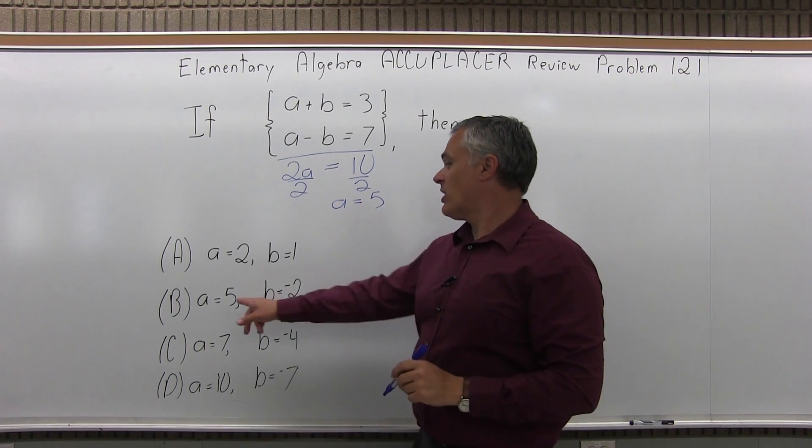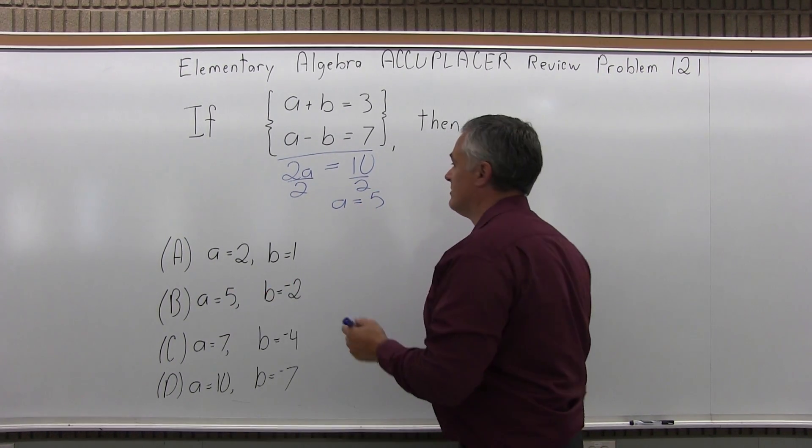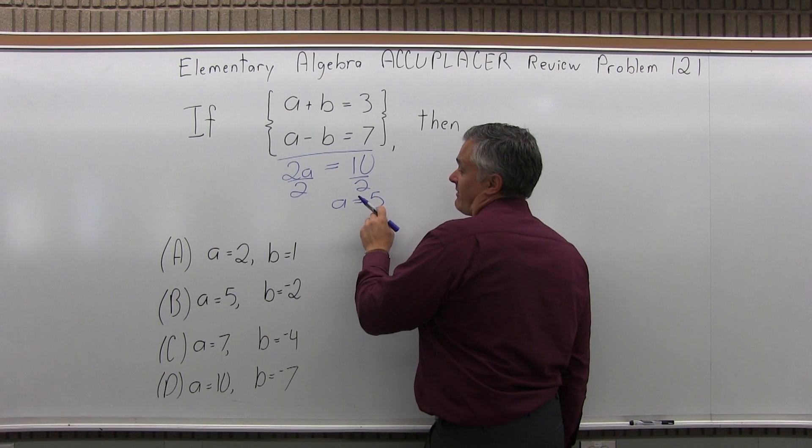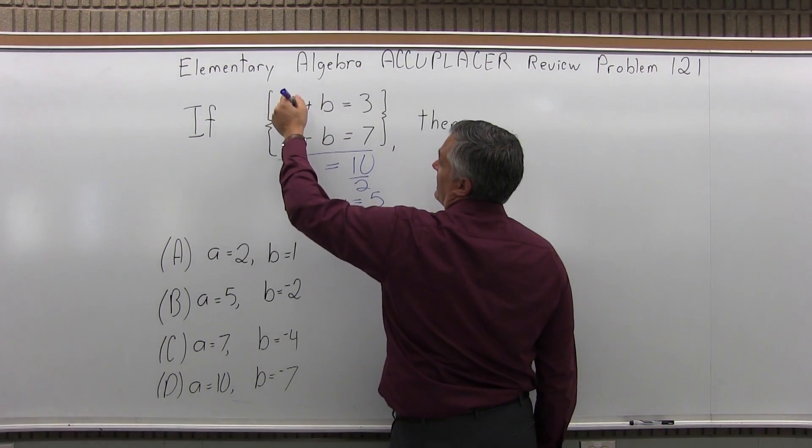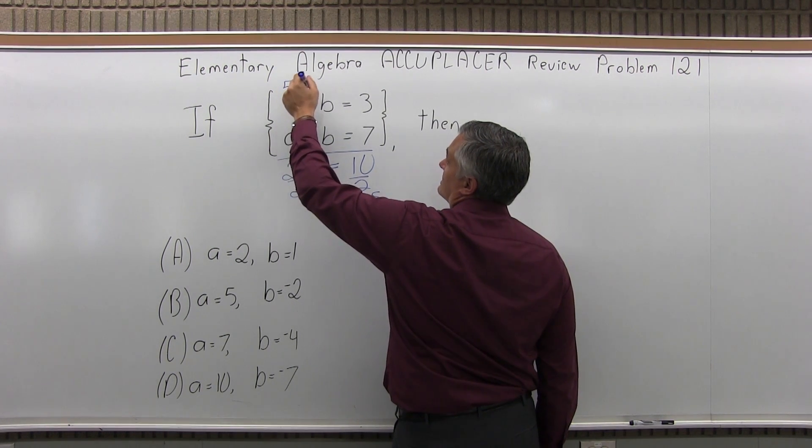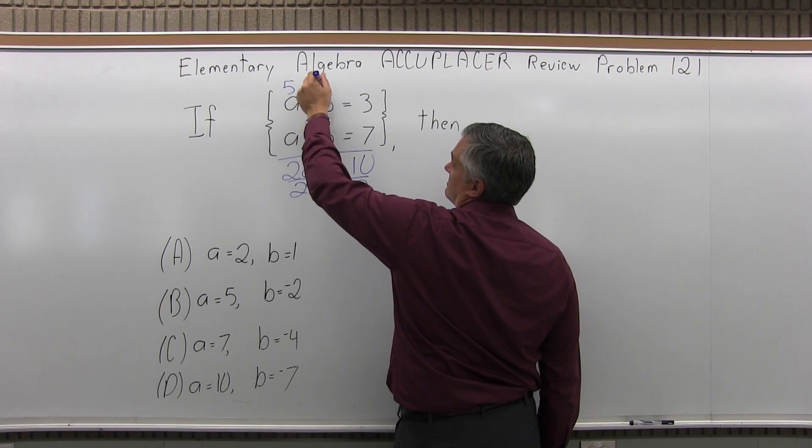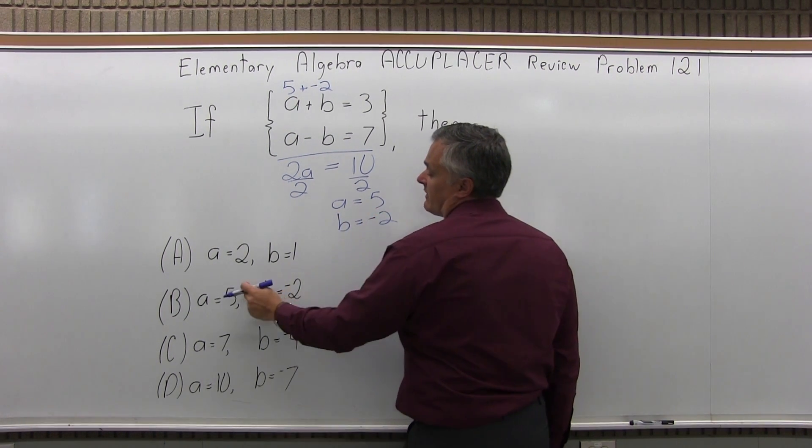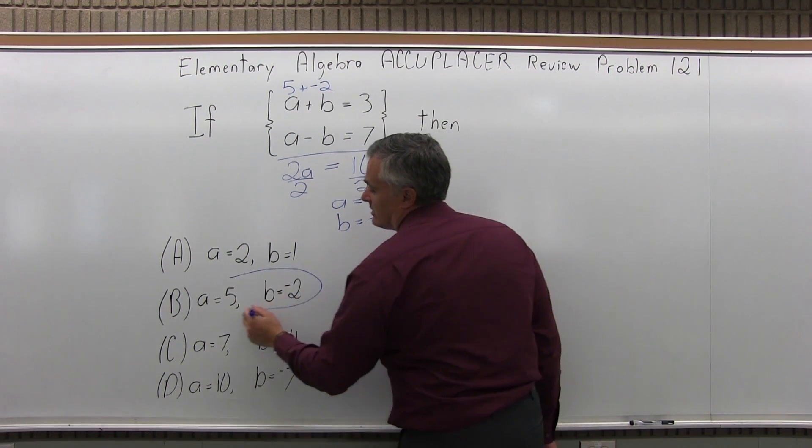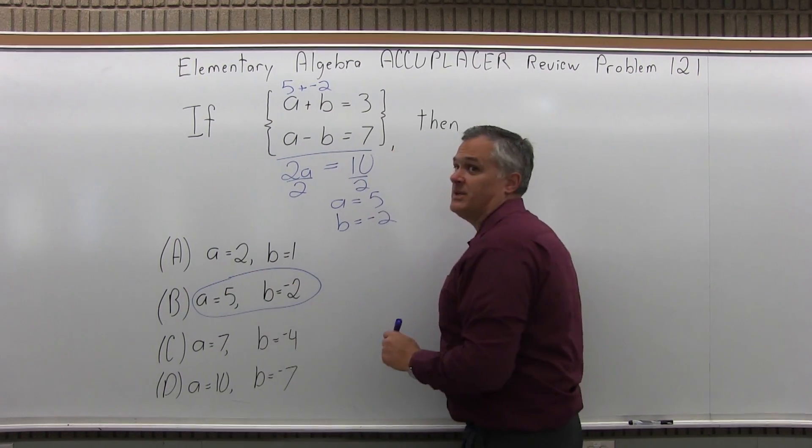There's only one option with A is 5 but you could go back with A is 5 and put it back into either of the originals. If A is 5 plus something is 3, well it must be plus or minus 2. So B is minus 2. A is 5, B is minus 2 is option B.